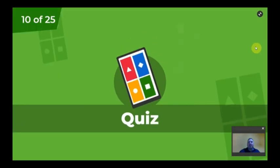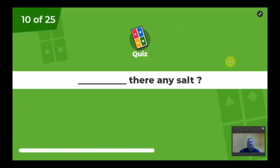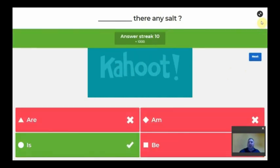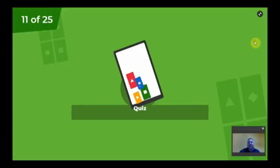Next question, question number ten: any salt there, any salt? Of course, here you're just asked for the verb to be. Does salt take plural or singular? Of course, salt is uncountable, therefore is there any salt?